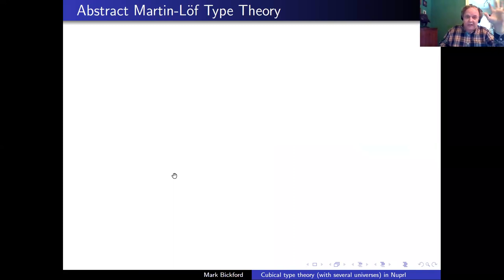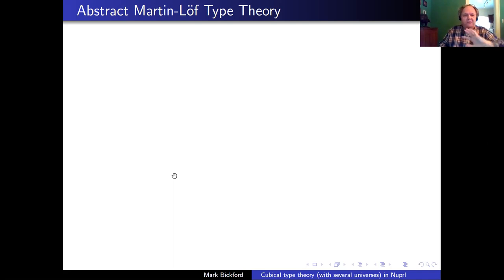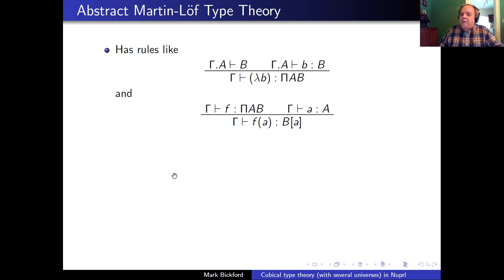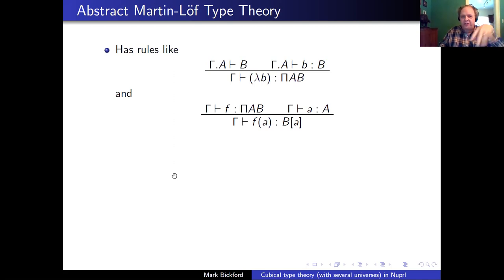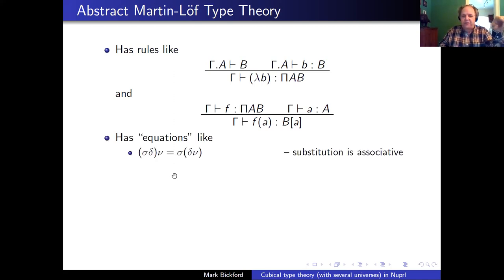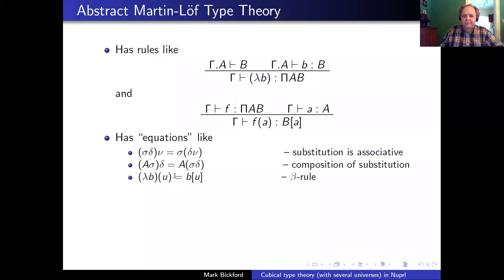A lot of the stuff on my next couple of slides has already been covered in previous talks, so I'll quickly run through this. In abstract Martin-Löf type theory, you have these rules and that kind of syntax where there are no variables — just contexts, terms, substitutions, and so on. It has equations: substitutions are associative, there's composition of substitution, there's a beta rule. The primitive concepts are contexts, types in a context with some notion of equality on types, terms with some notion of equality on terms, and substitutions as natural transformations.